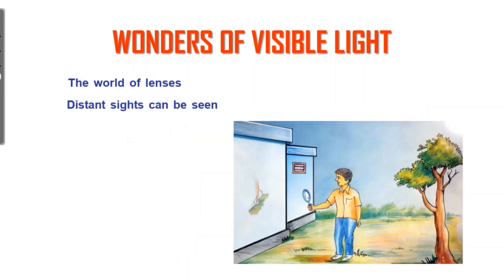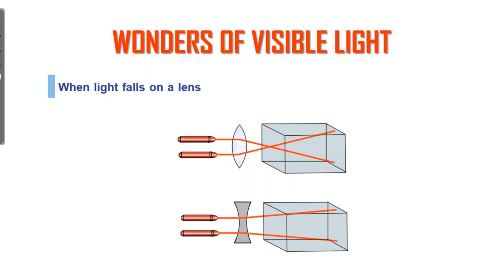We can see distant objects using a lens. In the upper portion, the light rays are converging. But in the lower portion, the light rays are diverging. For a convex lens, light waves converge. For a concave lens, light waves diverge.